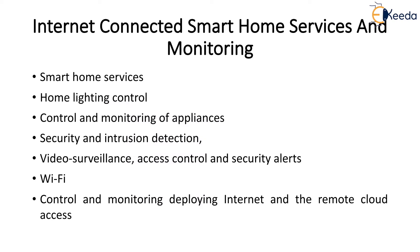The internet-connected smart home services and monitoring — the home automation system is a building automation for a home. Smart homes, smart cities, smart environment monitoring and smart agriculture are all examples of IoT applications and services. Summarizing the design approaches to IoT applications for smart homes, smart cities, smart environment monitoring and smart agriculture are illustrated. Home automation enabling and deploying the OpenHAB.